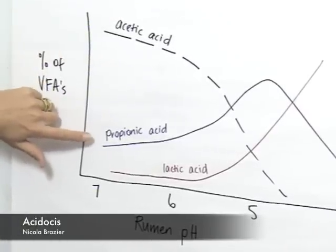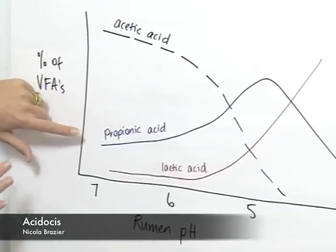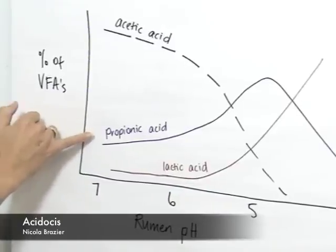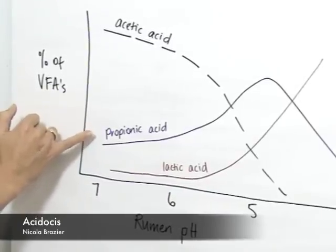Propionic acid is very important for providing energy to the cow. It is the volatile fatty acid that is produced when starch is fermented.